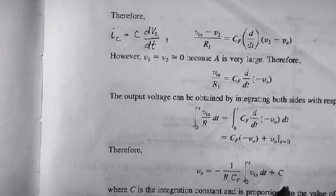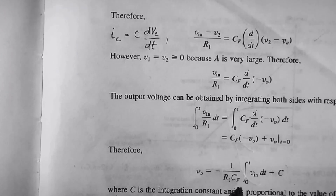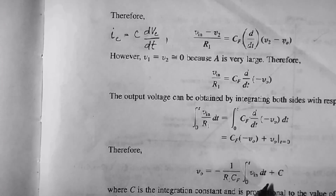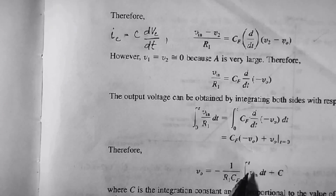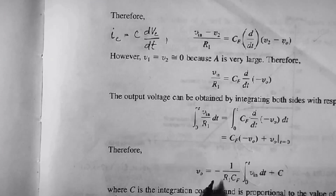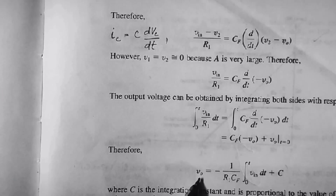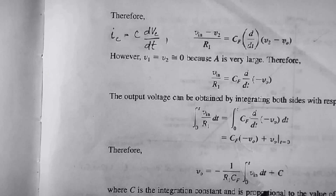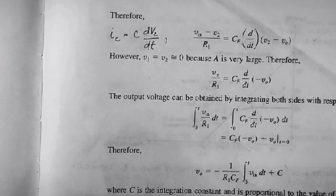The constant of integration C becomes 0. If we take the time constant R1·CF as 1 second, then V_output is proportional to the integral of V_input with respect to time. From the equation we can also see that V_output is inversely proportional to the time constant R1·CF. More precisely, V_output is proportional to the negative integral of V_input.